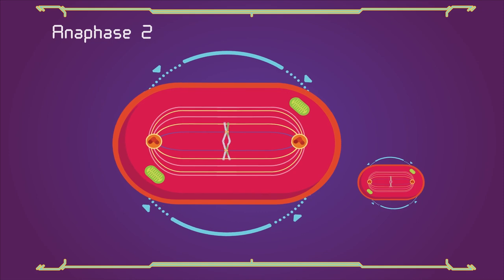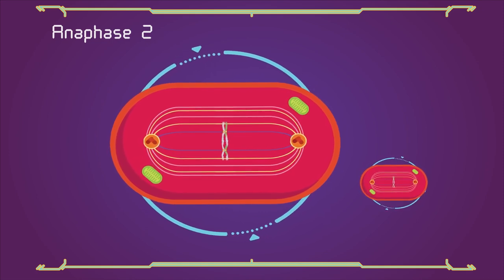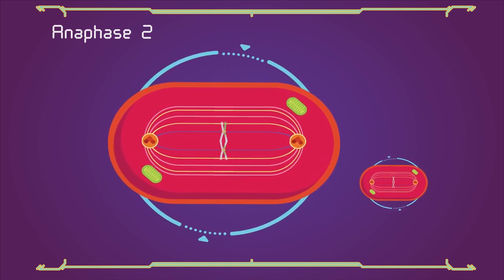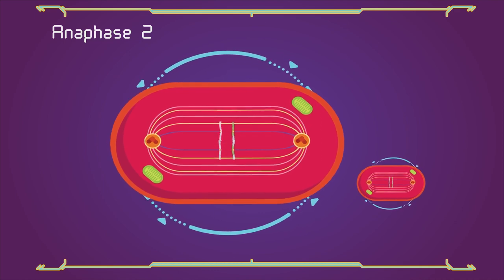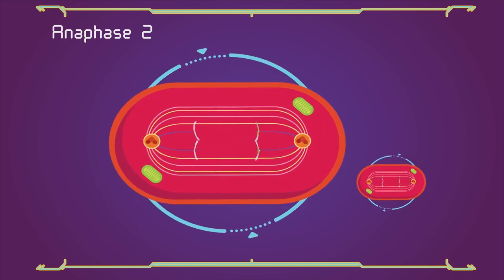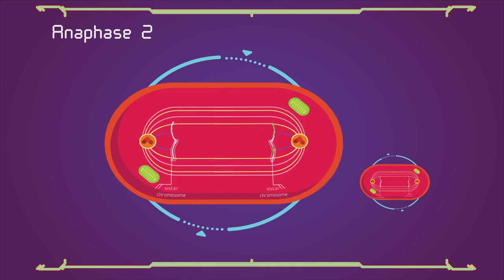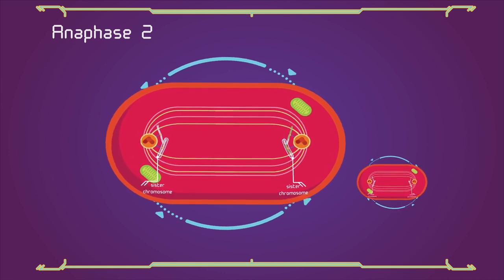This is followed by anaphase 2, in which the remaining centromeric cohesion is cleaved, allowing the sister chromatids to segregate. The sister chromatids by convention are now called sister chromosomes as they move toward opposing poles.